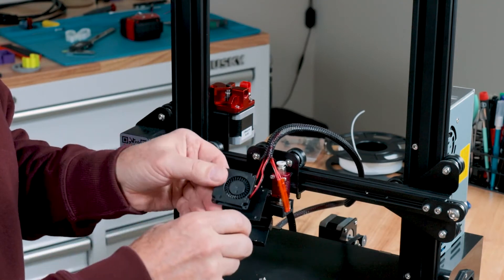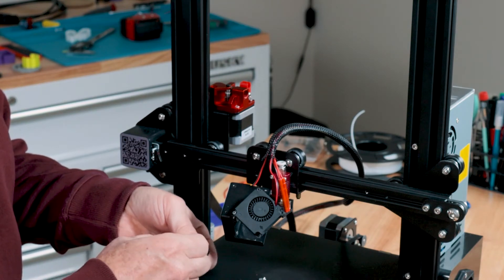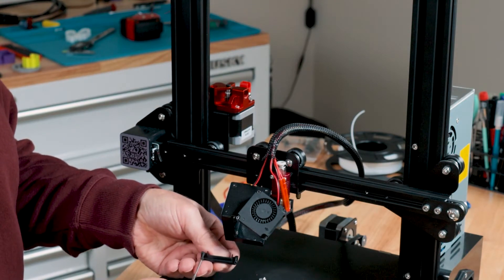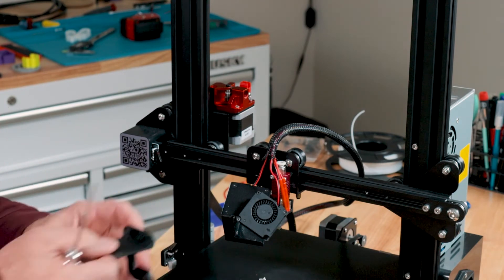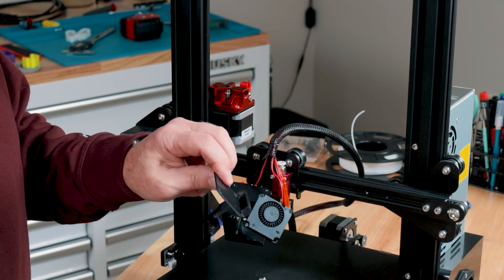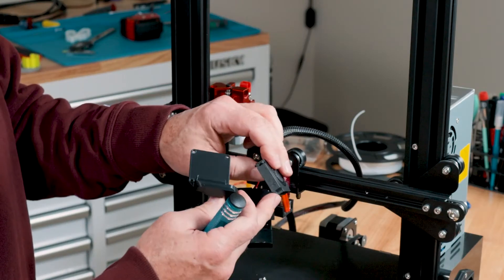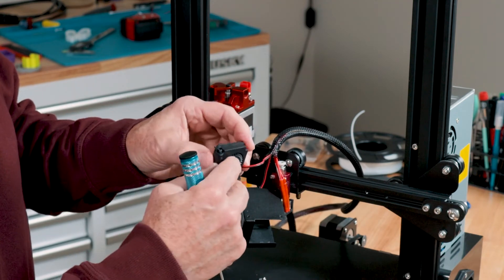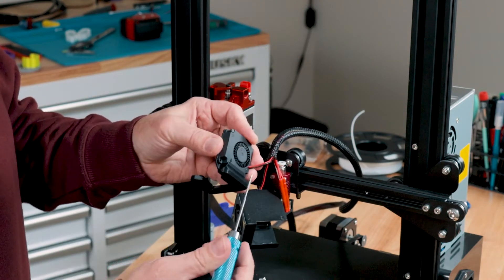Take the stock fan shroud off. The new one that you've printed actually has a support so the fan will lay nice and flat. You may have to trim some of these edges with an X-Acto knife or utility knife to get it so the fan will actually snap right into this here.